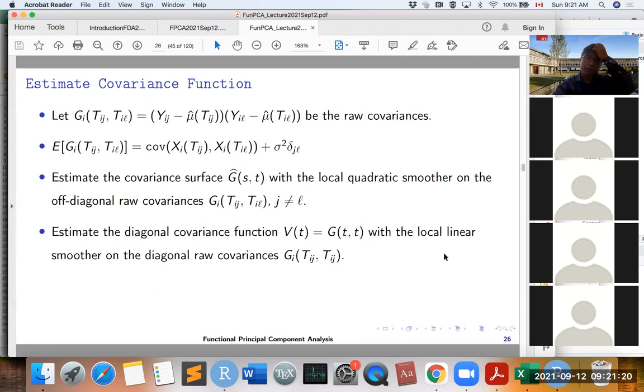And then, we can do the local linear smoother on the diagonal raw covariances G_I. So on the diagonal raw covariance G_I, delta_JL equals 1. So this basically is the covariance function plus sigma squared. So then we can estimate sigma squared as the difference between estimated V(T) minus G(T,T). So this is the estimating for sigma squared.